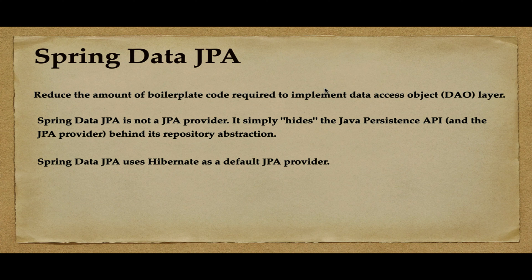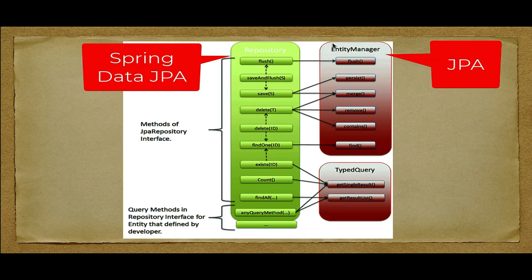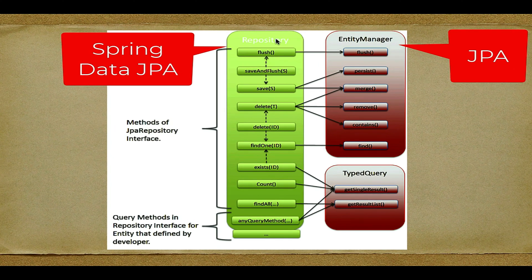Spring Data JPA is used to reduce the amount of boilerplate code required to implement the Data Access Object layer. Importantly, Spring Data JPA is not a JPA provider — for example, Hibernate is a JPA provider, but Spring Data JPA is not. It simply hides the Java Persistence API behind its repository abstraction. Spring Data JPA is essentially an abstraction layer on top of the Java Persistence API, and EntityManager is an interface of that JPA.